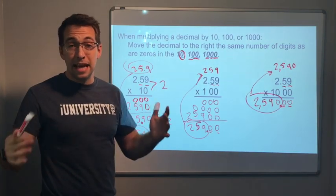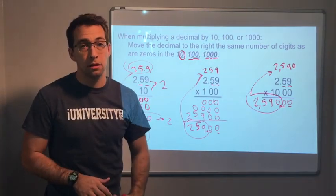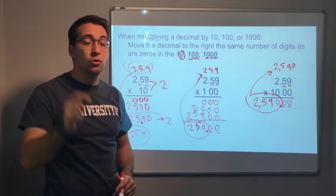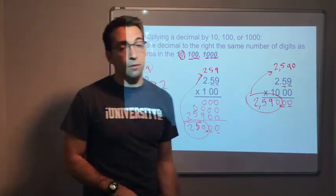That's it. It's that simple. So whenever you're multiplying a decimal by 10, 100, or 1,000, move the decimal to the right the same number of zeros. One, two, or three zeros.